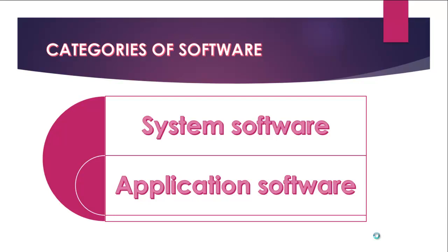Application software includes programs designed to perform specific tasks or functions, such as word processing, software for designing, spreadsheet management, and SPSS for data analysis, and so on. These two categories of software enable the hardware of the computer system to function very well.